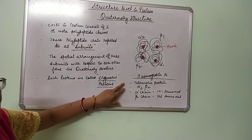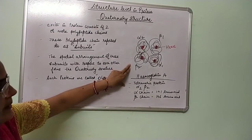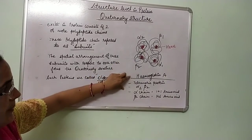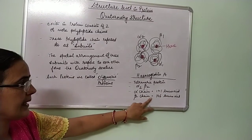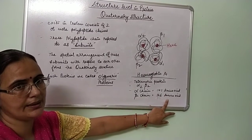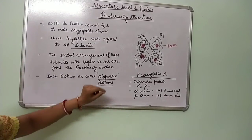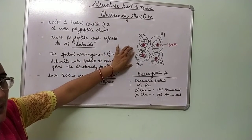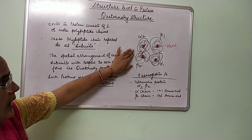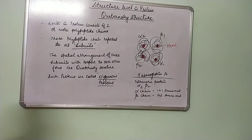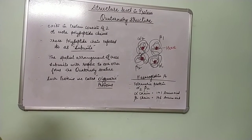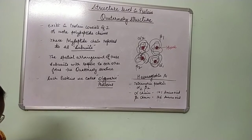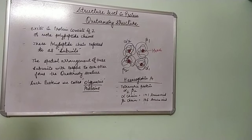Hemoglobin is a tetrameric protein, as four polypeptide chains are present — two alpha and two beta. The alpha chain contains about 141 amino acid residues, while the beta chain contains 146 amino acid residues. The polypeptide portion of the protein is known as globin, and a heme group is present inside each polypeptide chain, which binds with oxygen.